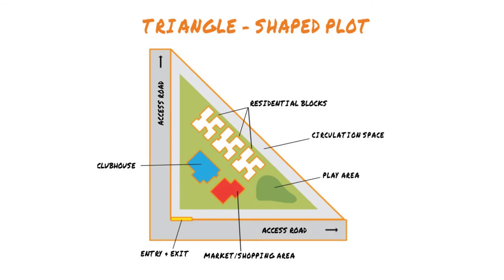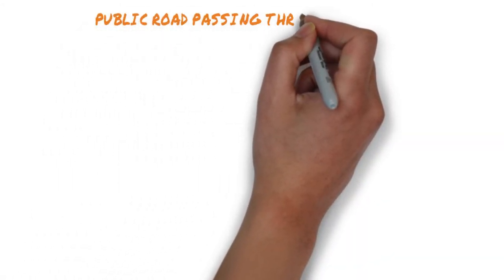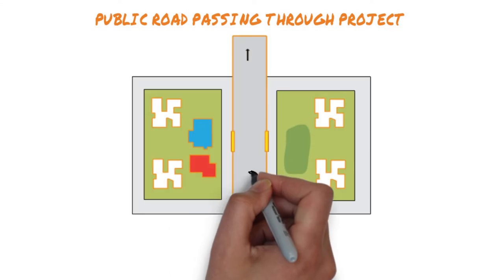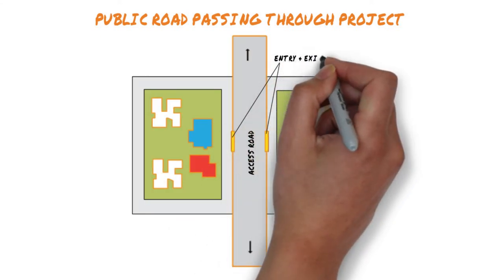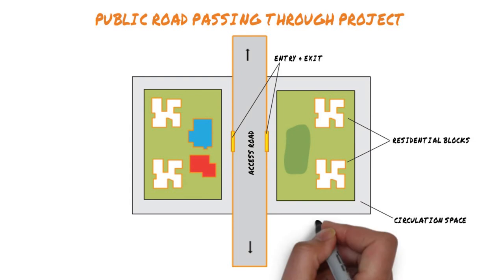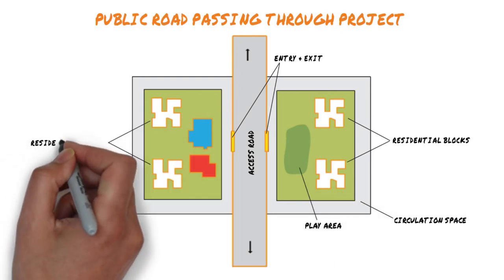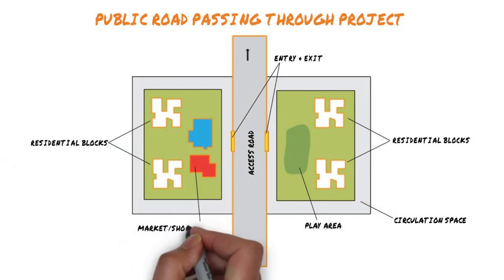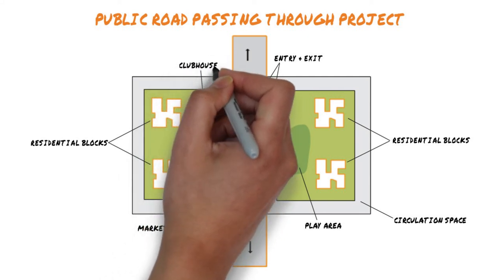Sometimes there's a public road running through the project. In a situation like this, residential units are spread out on either side of the main road. While selecting a home, check whether both sides have separate or common amenities. Find out if you'll need to cross the main road or if there's a dedicated private path to get to the other side.